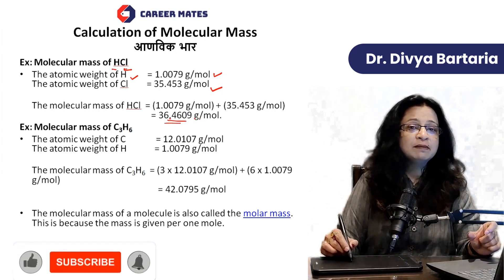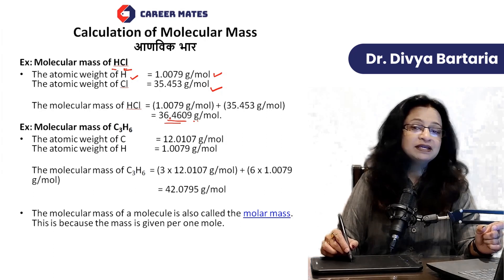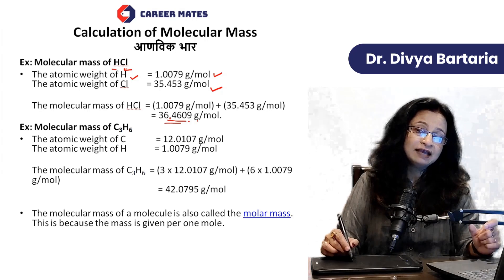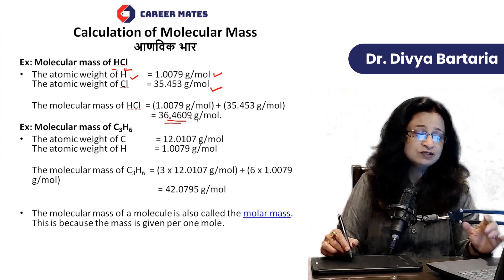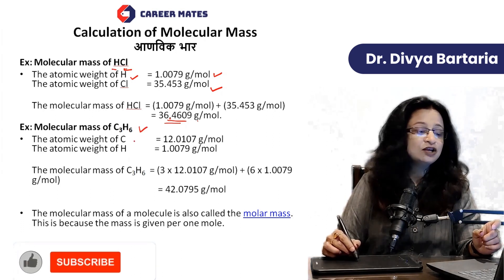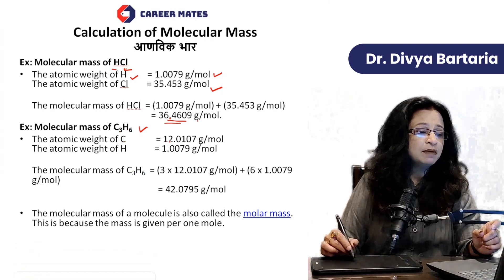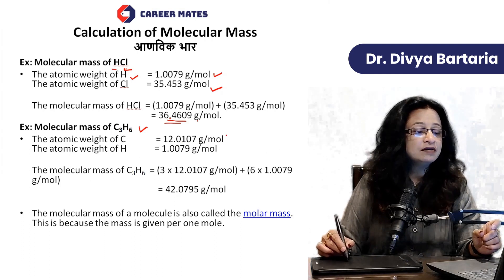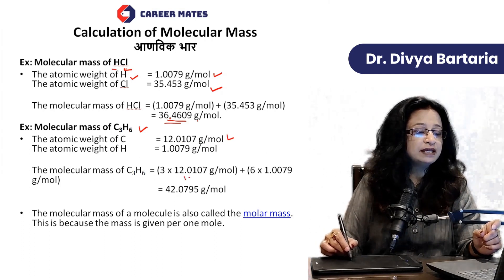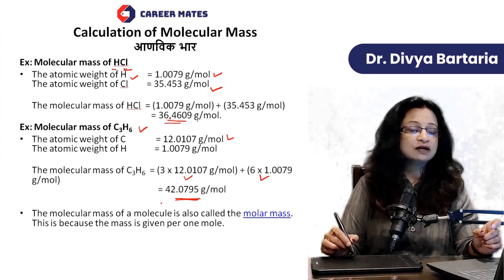We get the weight of one mole, and that is why it is known as molar mass. Accordingly, carbon's mass is 12.0107 grams per mole. This is how we multiply it. Similarly, hydrogen has 6 atoms, so we multiply 6 by its weight. And then we get the molar mass or molecular mass of C3H6.